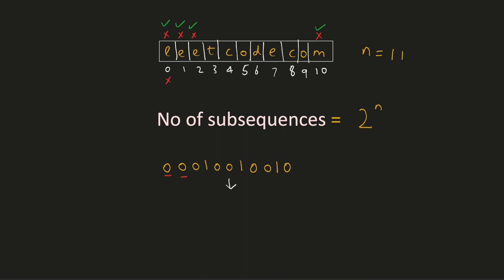Since the bit is 0, we will ignore the corresponding character l. Similarly, we will ignore the first and second characters. Since the bit is 1, we will include the third character in our subsequence. We will ignore the fourth and fifth characters. Since this bit is set, we will include the sixth character. We will ignore the next two characters as the bits are 0. As the bit is set to 1, we will include the ninth character O. We will ignore the last character. We have generated our subsequence from the bitmask, but it is not a palindromic subsequence.